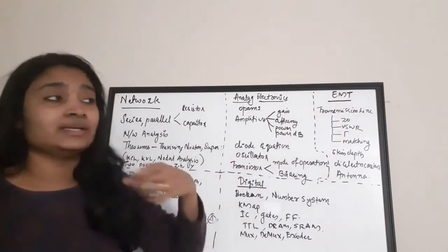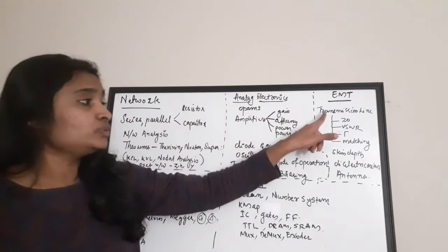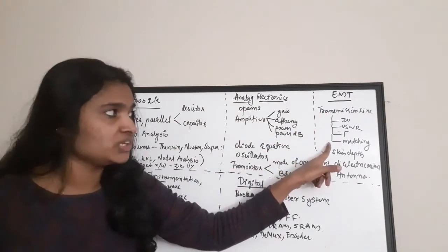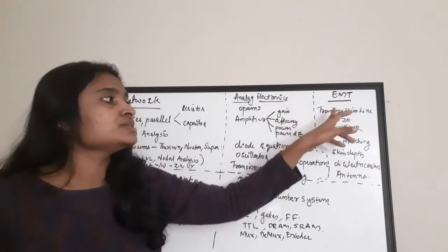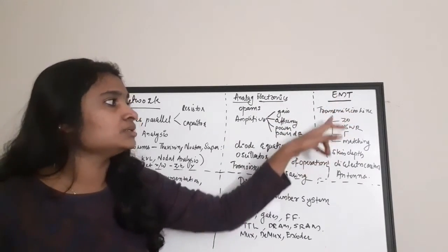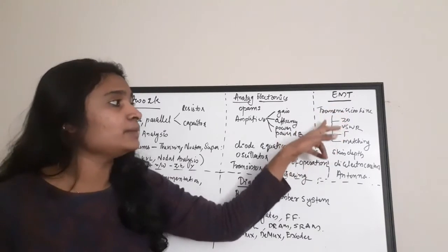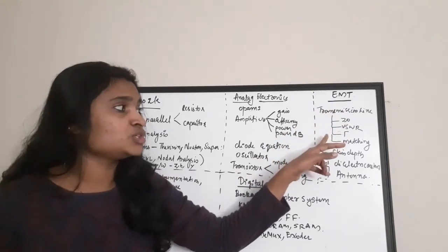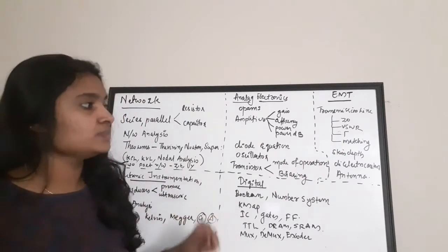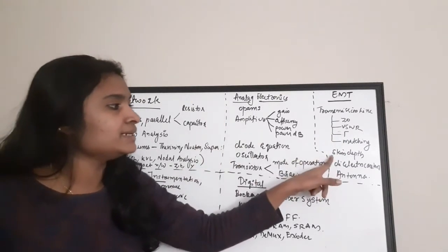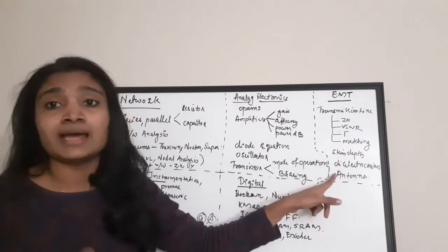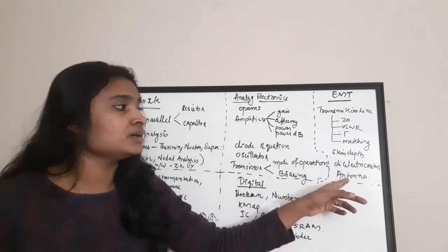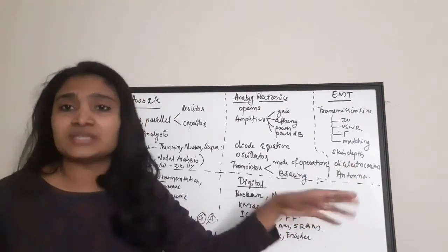Next is Electromagnetic Theory (EMT). Mainly concentrate on transmission line properties — I've seen many question papers with transmission line questions on characteristic impedance, Voltage Standing Wave Ratio (VSWR), reflection coefficient, and matching. Also study skin depth, dielectric loss, and antenna problems including antenna power gain in dB.